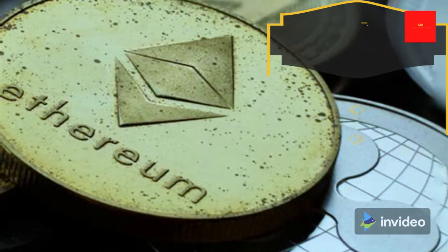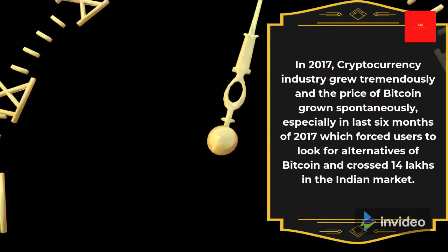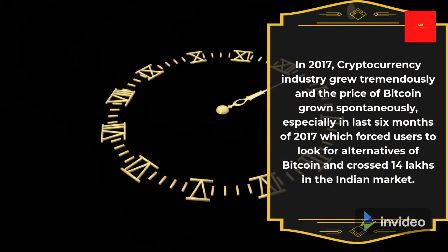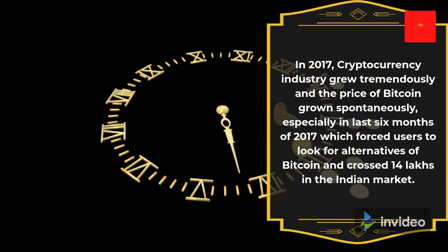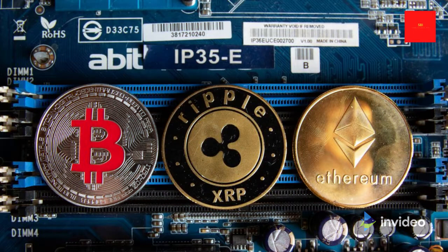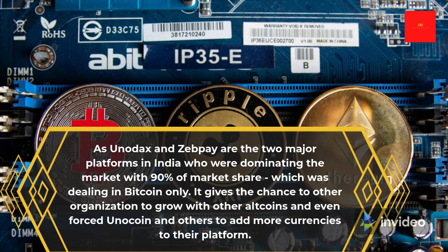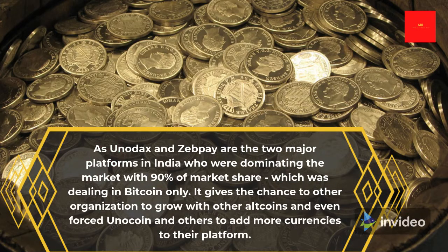In 2017, the cryptocurrency industry grew tremendously and the price of Bitcoin grew spontaneously, especially in the last six months of 2017, which forced users to look for alternatives to Bitcoin, crossing 14 lakhs in the Indian market. Unocoin and Zebpay were the two major platforms in India dominating the market with 90% market share, dealing in Bitcoin only, which gave other organizations the chance to grow with altcoins and even forced Unocoin and others to add more currencies to their platforms.